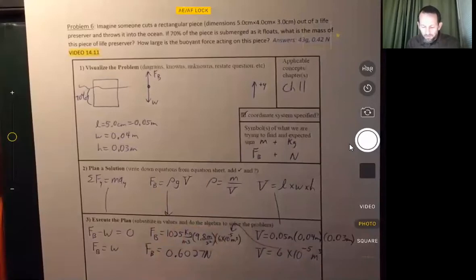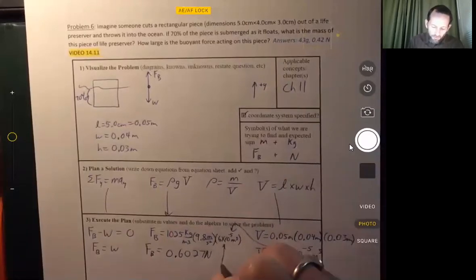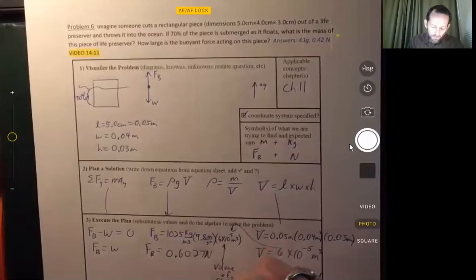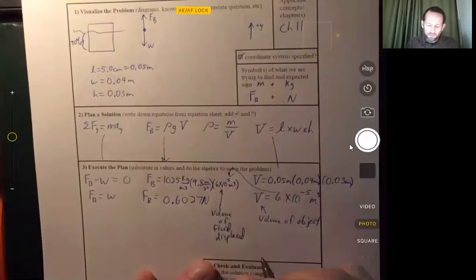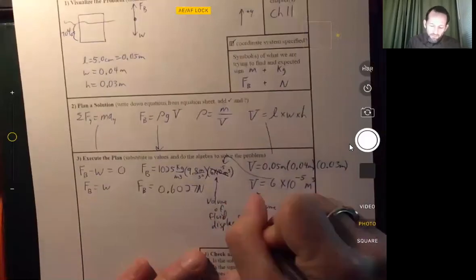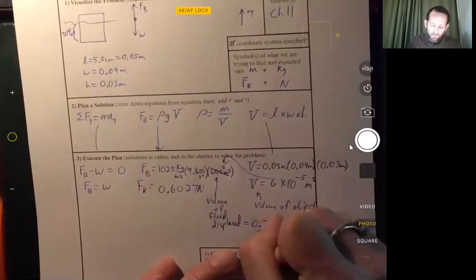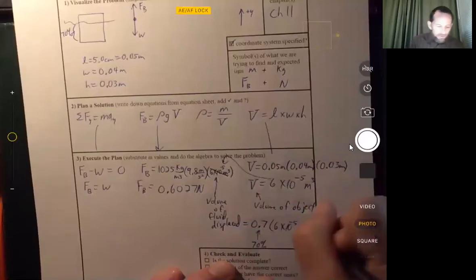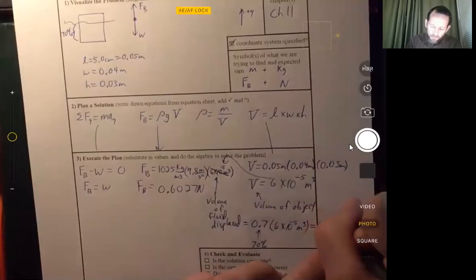However, if we look back and we say, wait a minute, what volume did we use? This is the volume of the object. But this volume is supposed to be the volume of fluid displaced. Okay. So if we're supposed to use the volume of fluid displaced, we need to modify that. So the volume of fluid displaced is equal to 0.7 times 6 times 10 to the minus 5th. That's 0.7. That's going to be 4.2 times 10 to the minus 5 cubic meters.